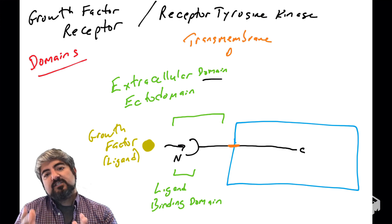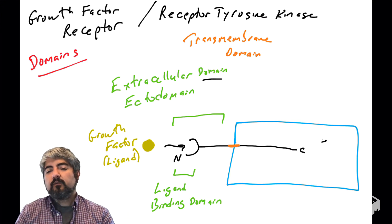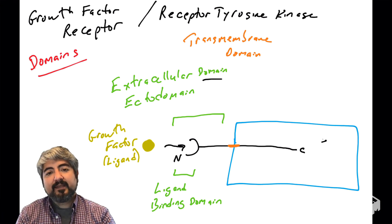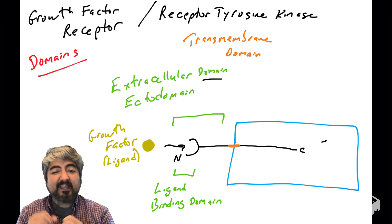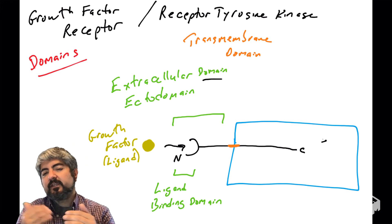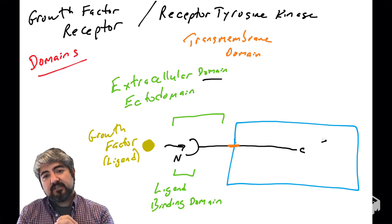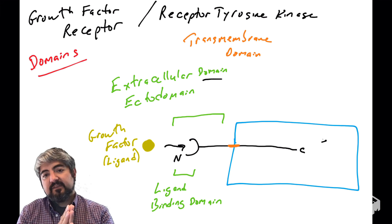There is also a region called the transmembrane domain that spans the lipid bilayer. For proteins to be inserted into the plasma membrane, they need a region that is typically very hydrophobic, containing many hydrophobic amino acids. This hydrophobic region allows the protein to be tethered into the membrane of the cell.